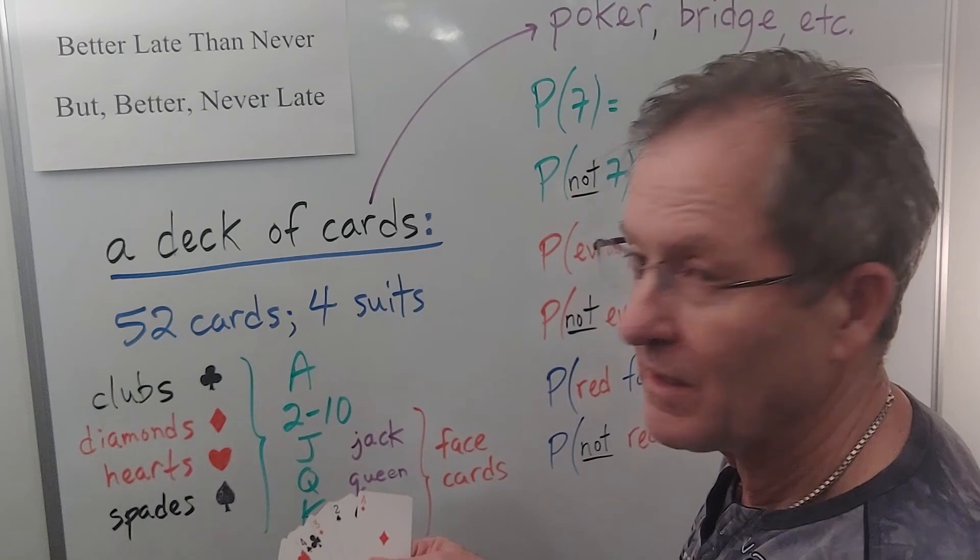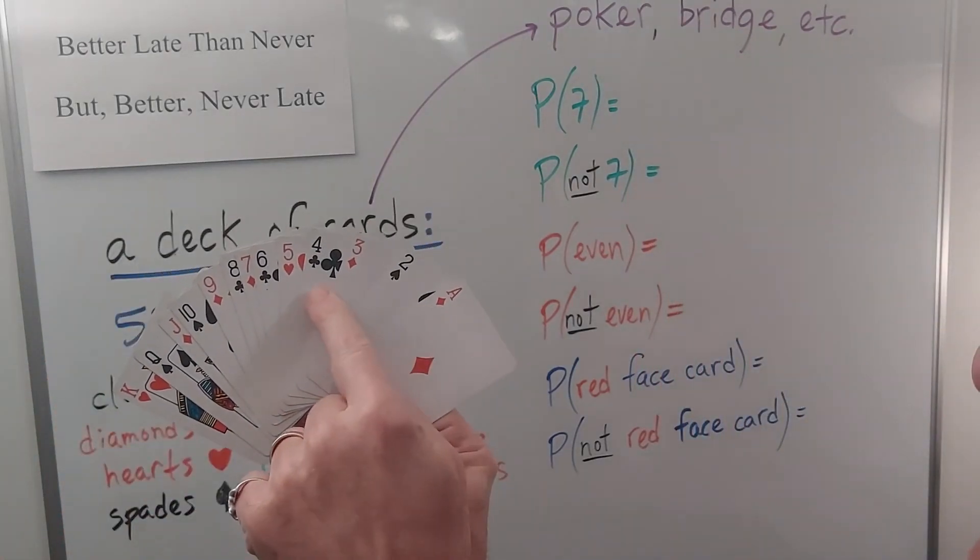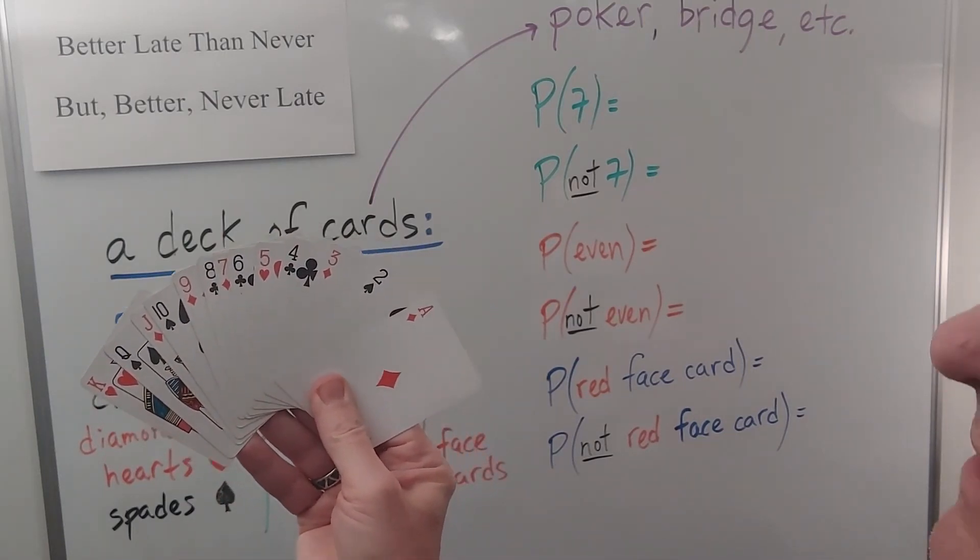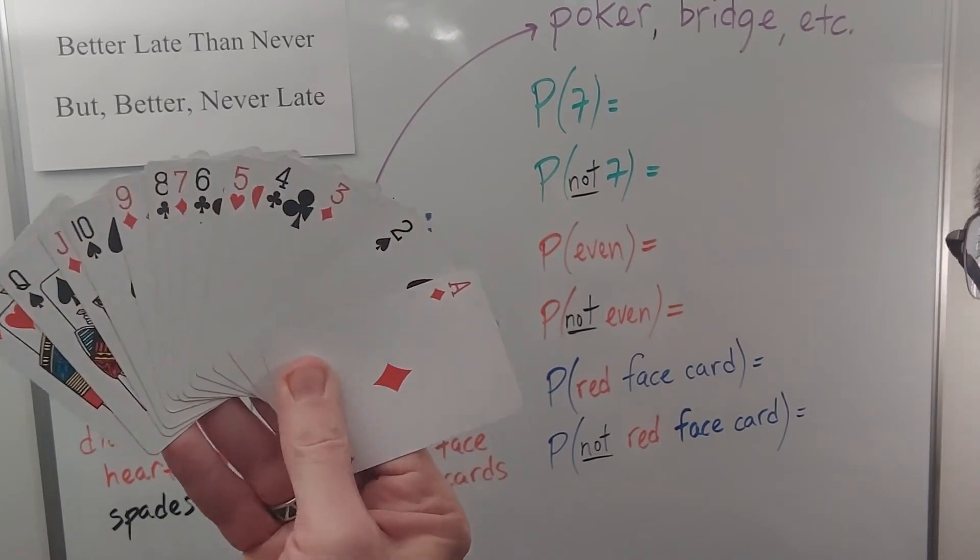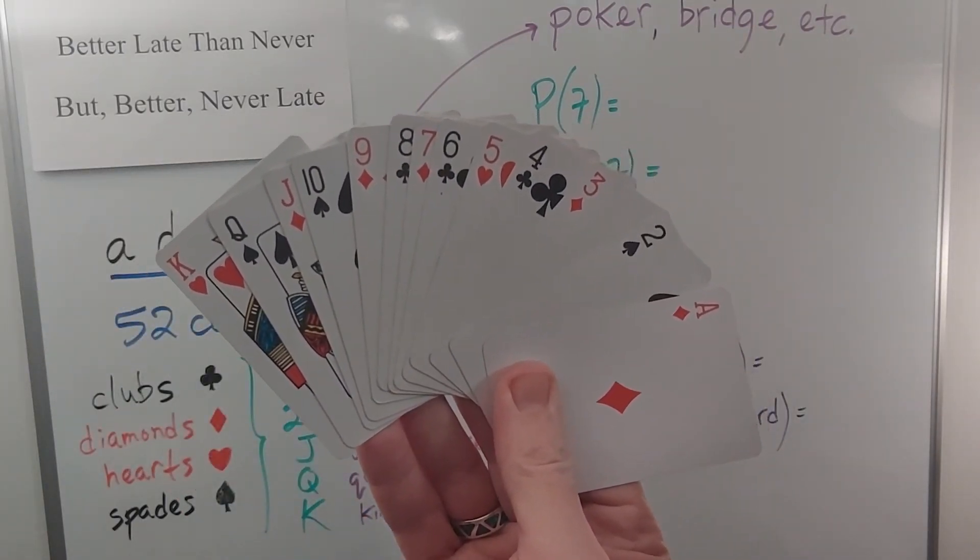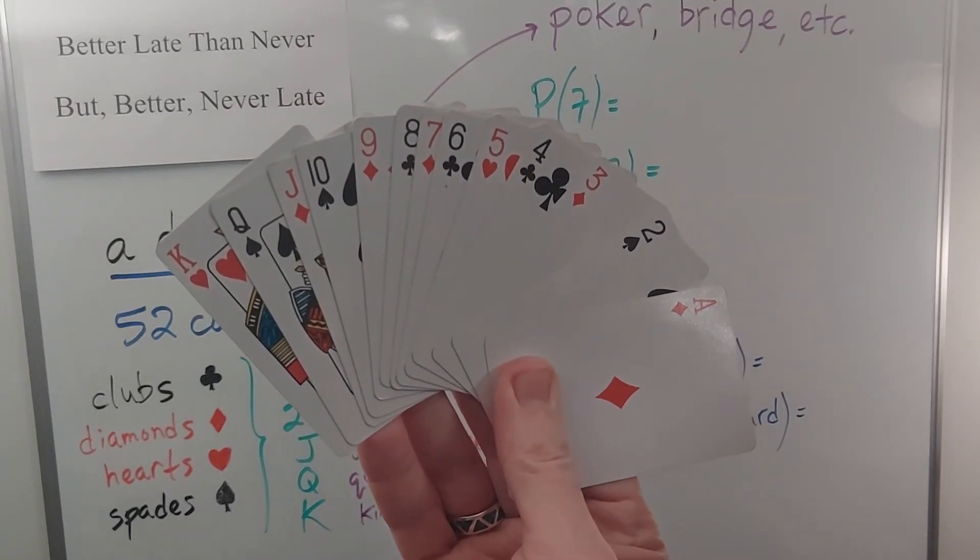So if I show you the standard deck, ace, two, three, four, five, six, seven, eight, nine, ten, jack, queen, king and you can see the different suits there. Most people I'm surprised to say are not familiar with these cards if they're under let's say I don't know 25 years of age.